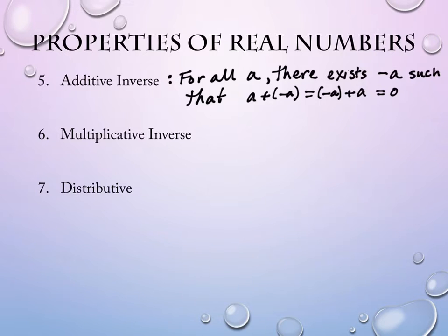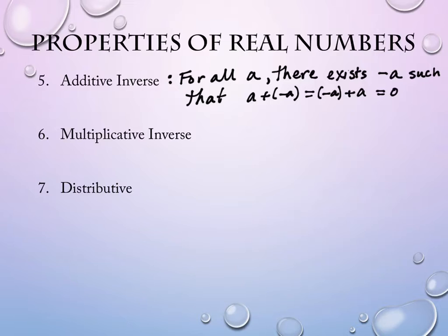We did do something with this property in class — back in section 1.5 where we were solving for a variable and moving things aside. When you're adding a value on each side of an equation, or subtracting a value on each side of the equation in order to move something, you're using the additive inverse property — you're trying to shift it, to move it.